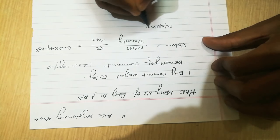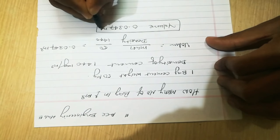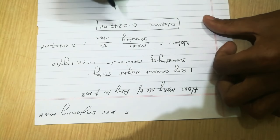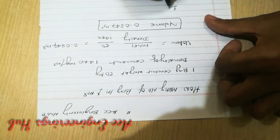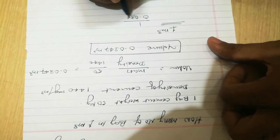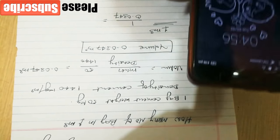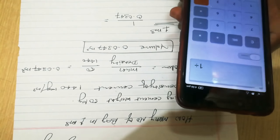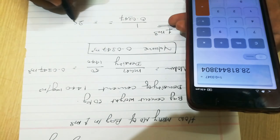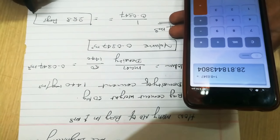So volume is 0.0347 m cube. Now, in one m cube, we divide 1 by 0.0347. So that comes to 28.8 bags. So this many bags will come in one m cube. Thank you.